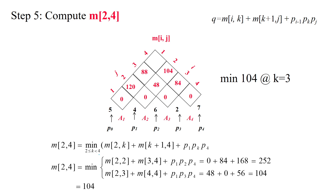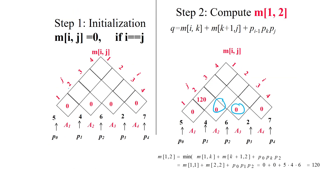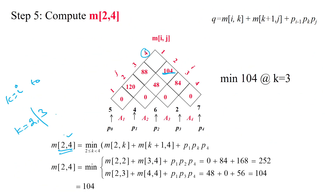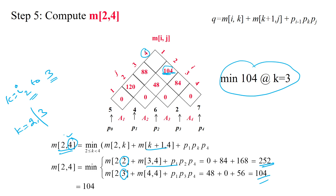Next, we calculate m[2,4]. With i=2, j=4, k ranges from 2 to j−1=3, giving two iterations. For k=2: the formula gives 252. For k=3: the formula gives 104. The minimum value is 104 at k=3. So m[2,4] = 104.